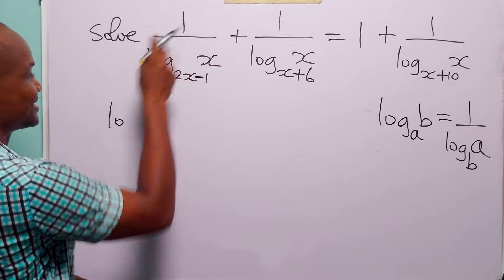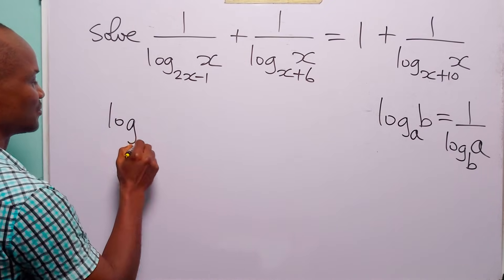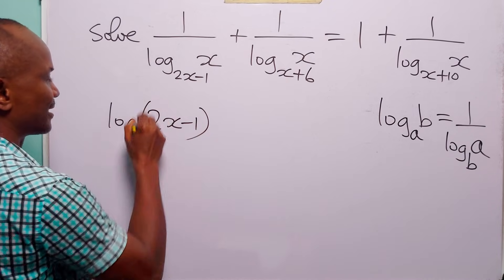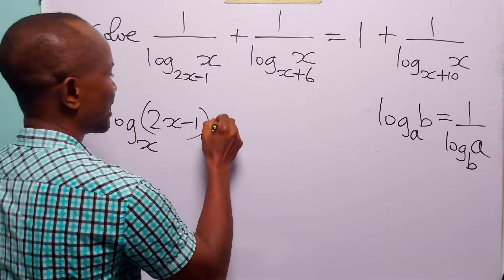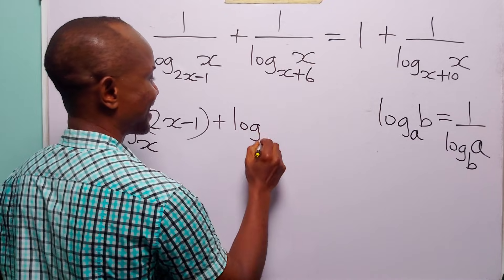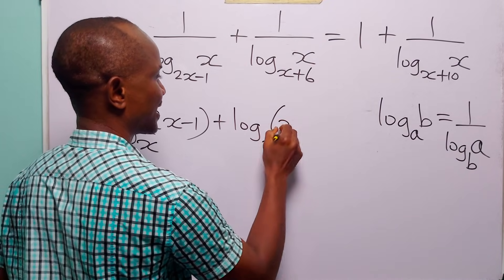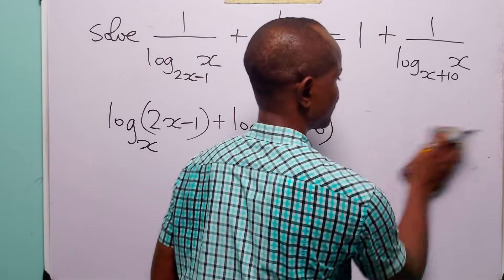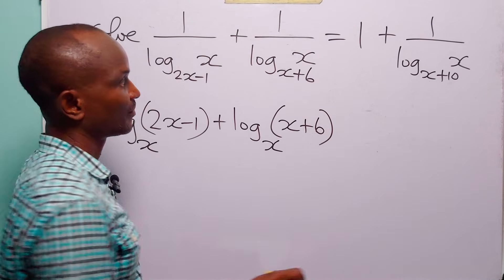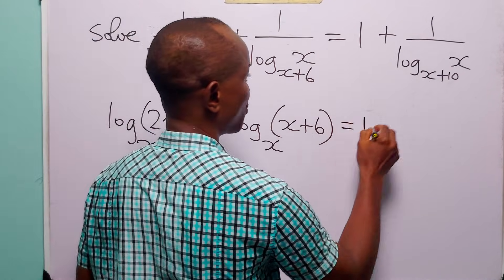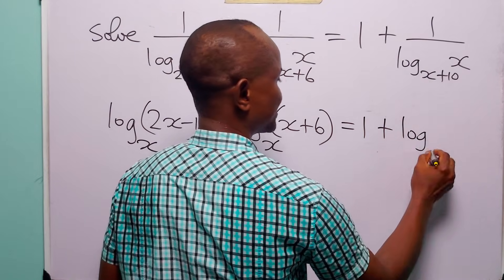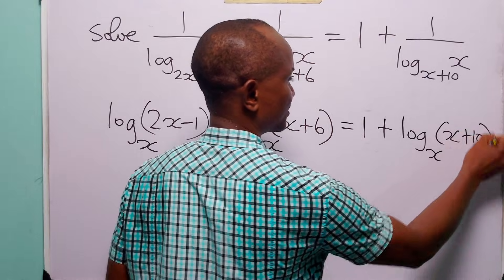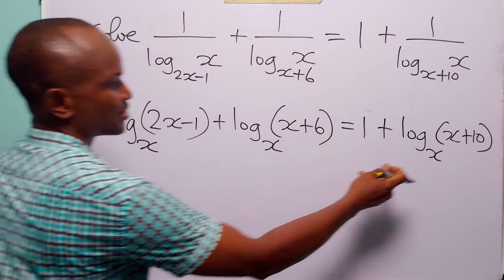When we do that, we have log to base x of (2x minus 1), log to base x of (x plus 6), and this is equal to 1 plus log to base x of (x plus 10).